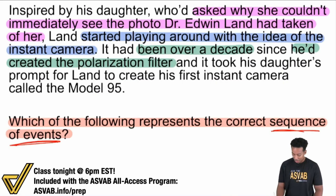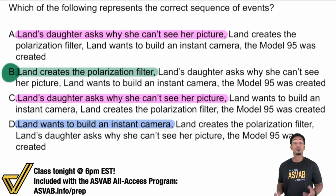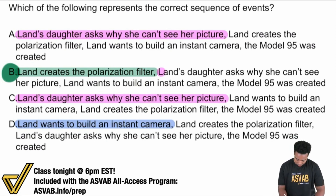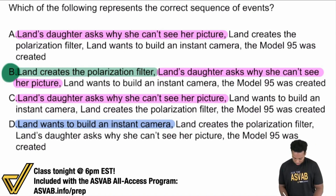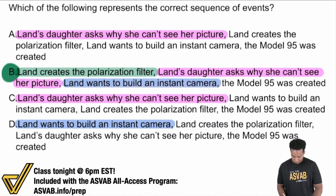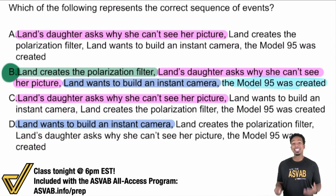The answer is B. B is correct because Land creates the polarization filter — that happens first. What happens next? The daughter asks why she can't immediately see her picture — that's number two. Then Land says, okay, this is taking too long, and starts tinkering with an instant camera — number three. After that, the Model 95 was born and created. That's why B is the answer. This is a sequence of events question in paragraph comprehension.